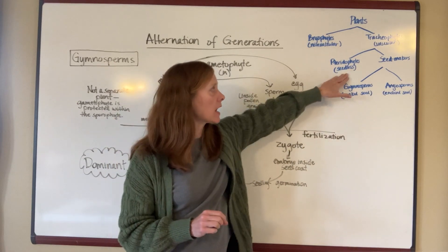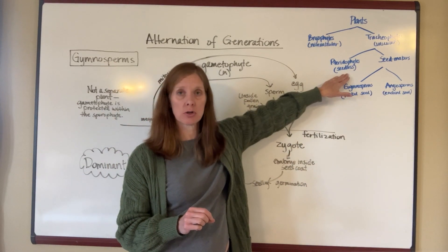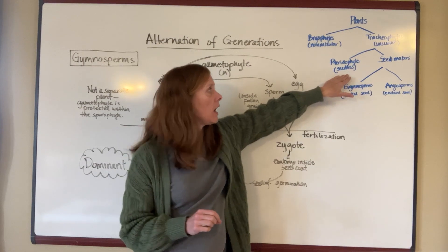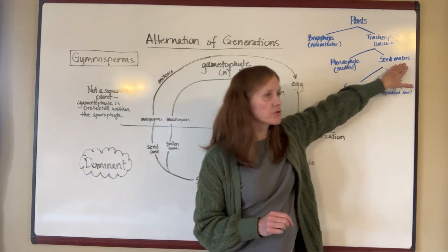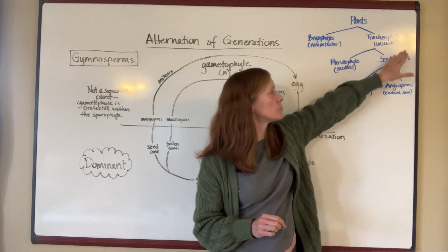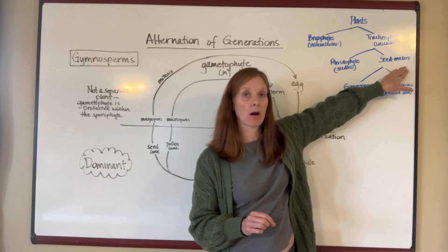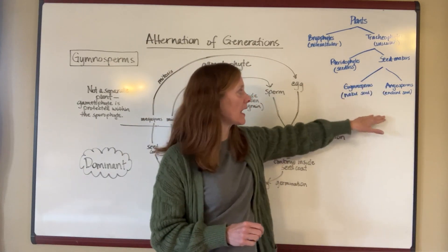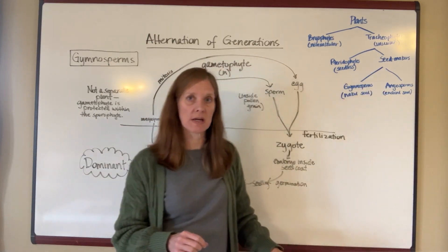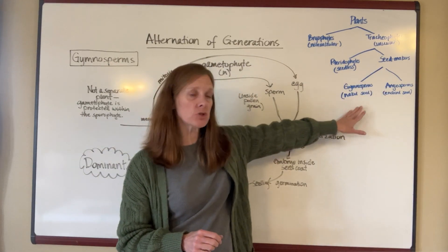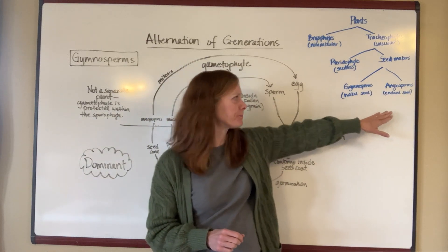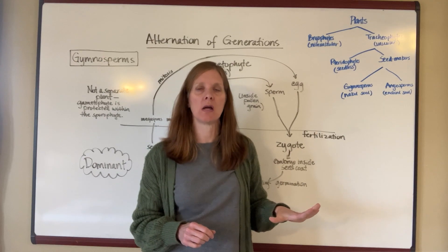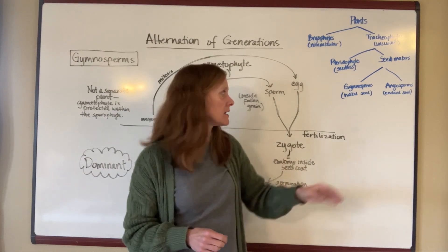We talked last time about the pteridophytes, or the ferns, which are seedless — they do not produce seeds. But there are also a lot of plants that are seed makers. The seed makers then subdivide into two different categories: we either have gymnosperms or we have angiosperms. The classification here is based on the types of seeds that they make.